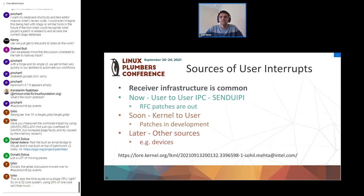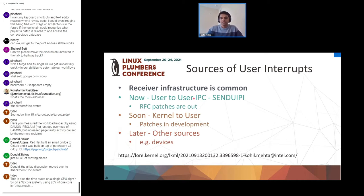There could be various senders who could generate user interrupts. The first one currently being enabled is a user-to-user IPC. Say you have a process running in user space and it wants to send a signal to another process running on some other CPU. After some enabling, send_uipi is a new instruction that lets you directly send the signal without any kernel intervention - you just execute an instruction in user space on one CPU and get an event delivered directly to another process executing in user space. RFC patches for this are out, there is a link provided.